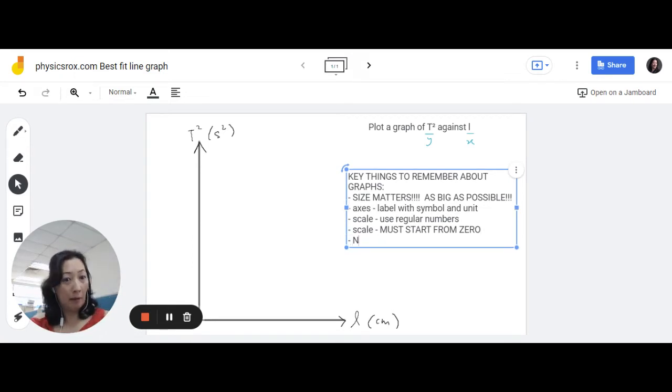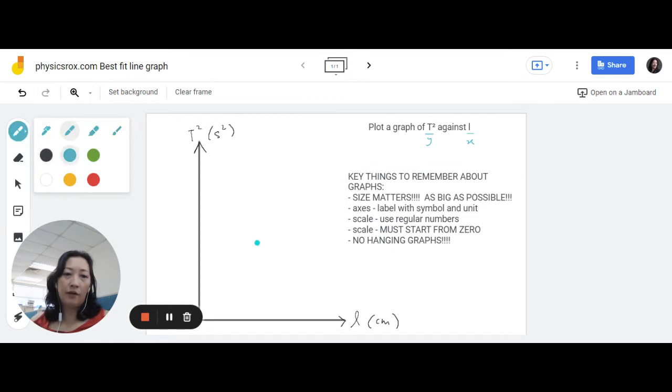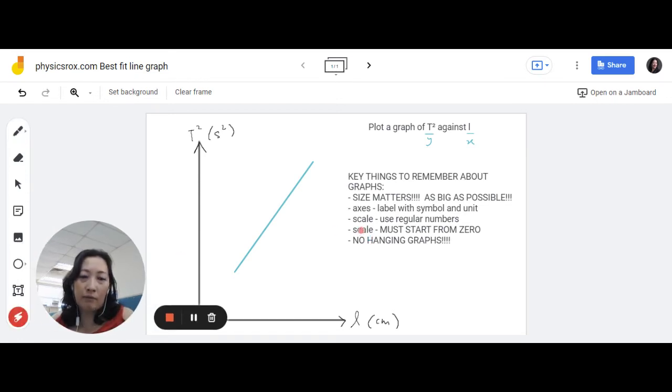And related to that concept of the relationship, no hanging graphs. Very important. What's a hanging graph? A hanging graph is a graph where after you've plotted, you just leave it like that, in the middle of nowhere. Floating, hanging. So, we don't want graphs like this. You have to extend this so that either it touches the y-axis, x-axis, or it goes to origin. Just do an extension. So, these two, the last two points, scale where we start from zero and no hanging graphs, has everything to do with how we would state the relationship of the graph.